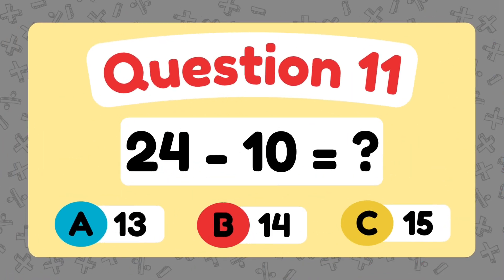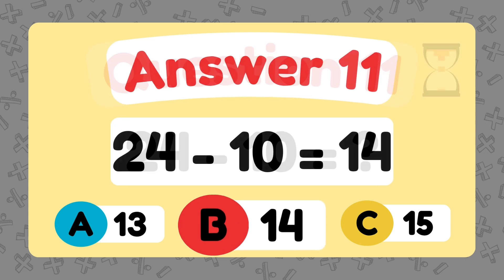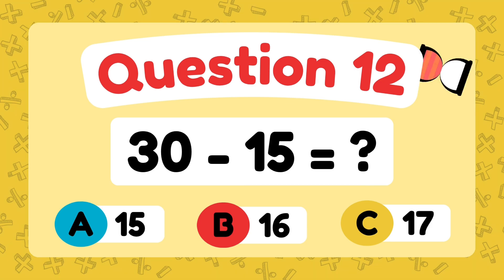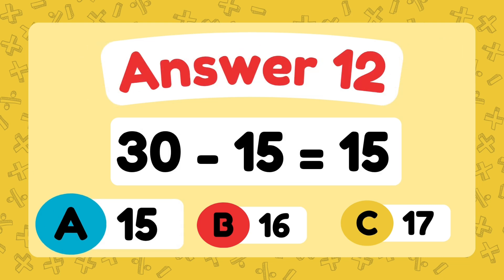What is 4 minus 10? The answer is 5. What is 24 minus 10? The answer is 5. What is 3 minus 7? The answer is 8.